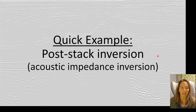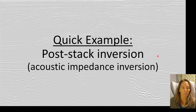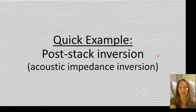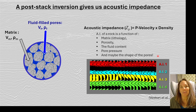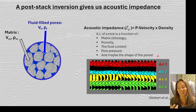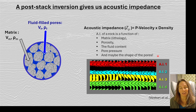I'm going to show a quick example of post-stack inversion results. There's a lot of information on seismic inversion out there, and this is a topic I'm covering in about ten minutes that has been an entire semester-long class. When we talk about post-stack inversion, it gives us information about the acoustic impedance — specifically about velocity and density: the bulk velocity and bulk density, including what's in the fluid-filled pore space as well as the matrix. Both of those features are very important for reservoir characterization.